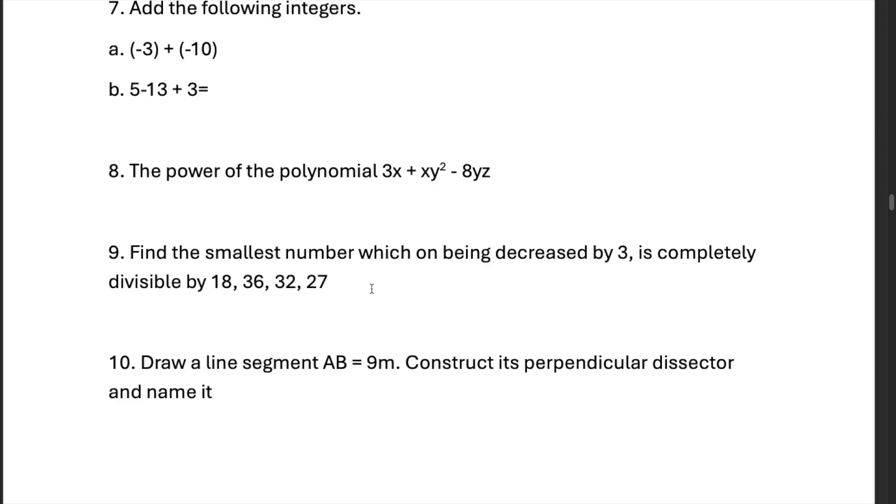Find the smallest number, which on being decreased by 3 is completely divisible by these numbers. When they ask you to find the smallest number, do the lowest common multiple, that's LCM. So do the LCM and then add 3 and you'll get your answer.